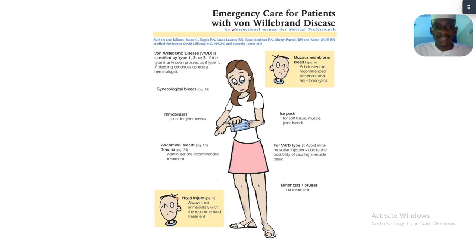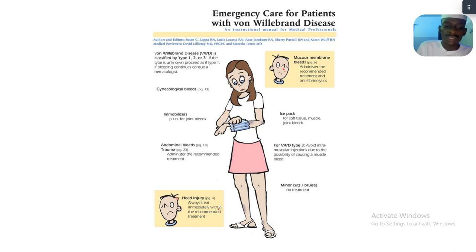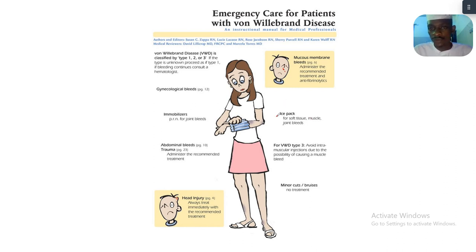Von Willebrand disease is classified by Type 1, Type 2, and Type 3. If the type is unknown and bleeding continues, consult a hematologist. Head injuries should always be treated immediately with the recommended treatment. Mucous membrane bleeds should be treated with the recommended treatment and anti-fibrinolytics.